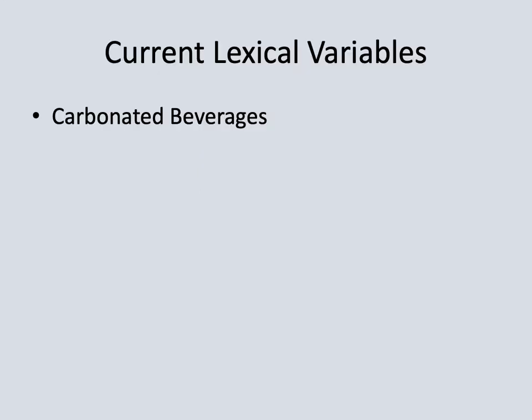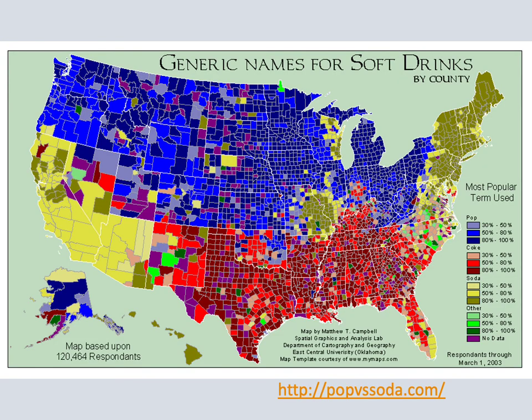Turning attention now to vocabulary differences — lexical variables that are still currently relevant today — probably the first thing that comes to mind are different terms for carbonated beverages. This map from an online survey shows the main differences between pop, shown in blue, and soda, shown in yellow. The third popular variant is coke as a generic term. Coke is common throughout much of the South as a generic term for pop or soda.